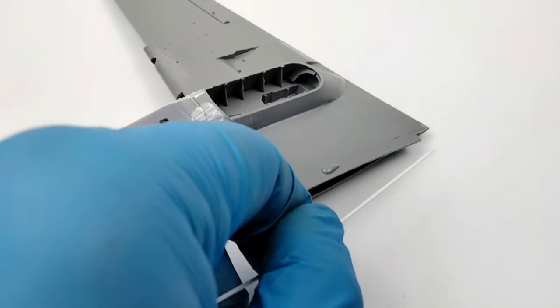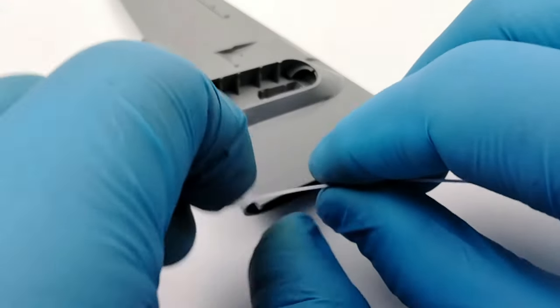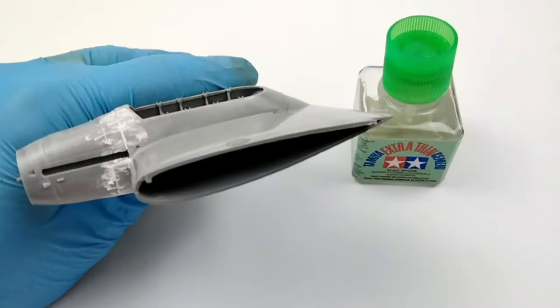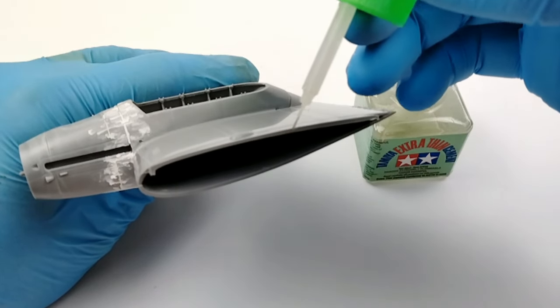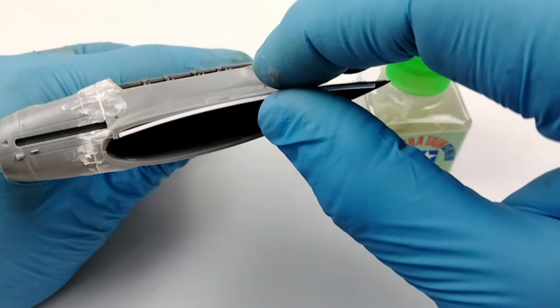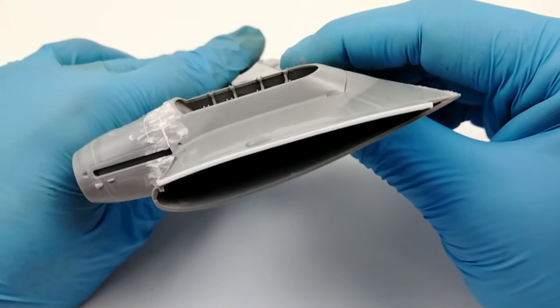Once I've cut the styrene strip to the proper length, I go ahead and just shape it a little bit using my fingers to get the curvature correctly so that it will contour with the wing itself. That is just a matter of applying some Tamiya Extra Thin on both surfaces, mating the two parts together, and making sure that it's flush with the surface of the wing, and shaping the plastic strip to match the curvature of the wing.